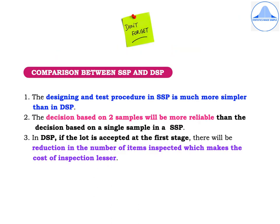Now let me explain the differences between a single sampling plan and a double sampling plan. The design and test procedure in a single sampling plan is much simpler than in a double sampling plan. However, a decision based on two samples is more reliable than one based on a single sample. Additionally, in a double sampling plan, if the lot is accepted at the first stage, there is a reduction in the number of items inspected, which makes the cost of inspection lower.